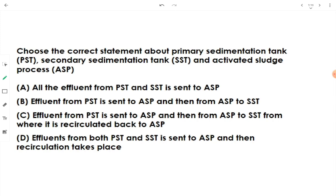Then, choose the correct statement about primary sedimentation tank, secondary sedimentation tank and activated sludge process. All the effluent from PST and SST sent to ASP. No. Effluent from PST sent to ASP and then from ASP to SST. No. Effluent from PST sent to ASP and then from ASP to SST. From where it is recirculated back to ASP. This seems legitimate option.